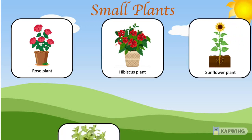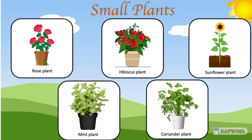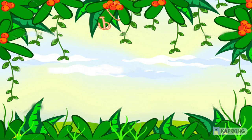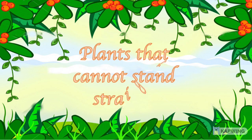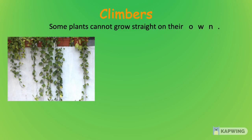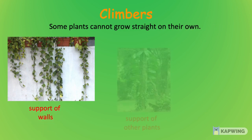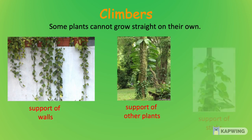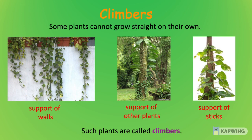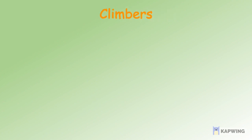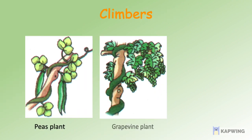There are some types of plants that cannot stand straight. Some plants cannot grow straight on their own — they need the support of walls, other plants, or sticks to grow straight. Such plants are called climbers. For example, pea plant, grapevine plant, money plant, etc.